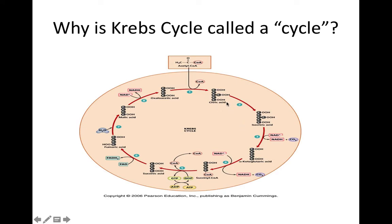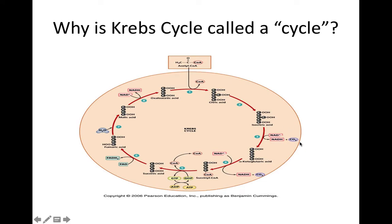The Krebs cycle is called a cycle because the original acceptor OAA is regenerated and the cycle continues as long as acetyl-CoA is present. The first intermediate is citric acid — citric acid cycle. The intermediates have three carboxyl groups — tricarboxylic acid cycle. The key accomplishment is that the cell has finished oxidizing glucose, stripped off all high-energy electrons to NAD or FAD, and fully torn apart the carbon skeleton, releasing all carbons as CO2.